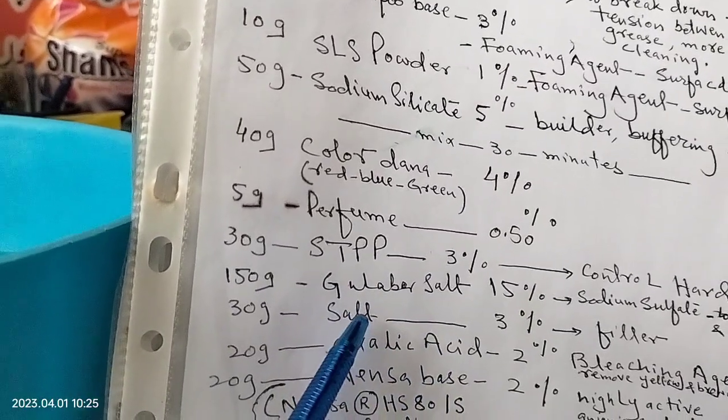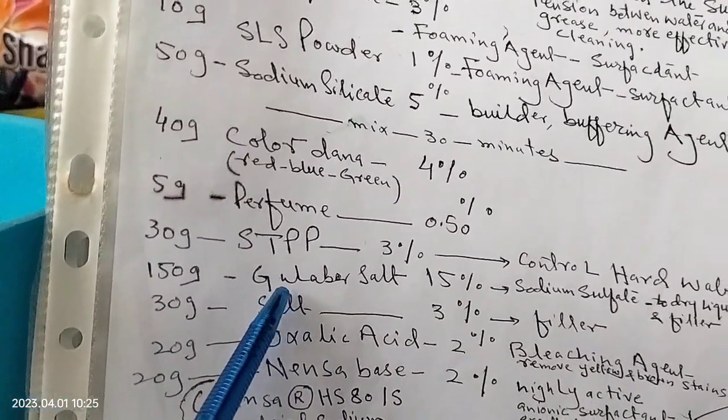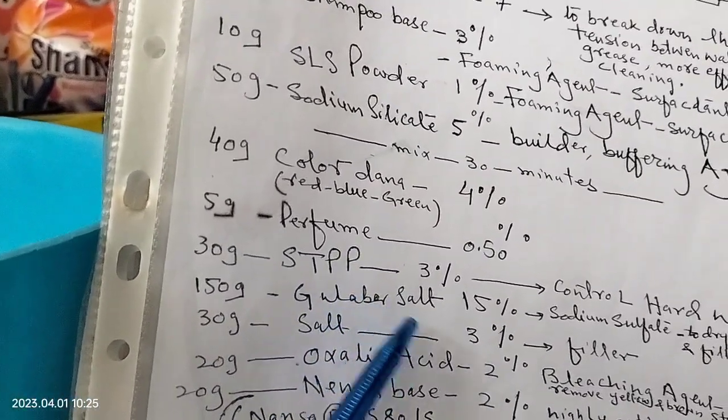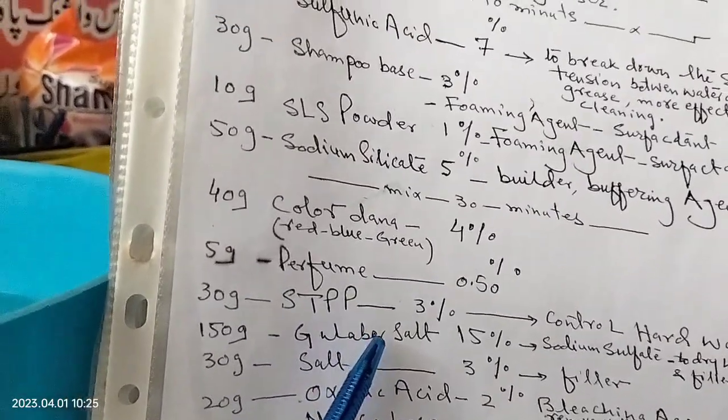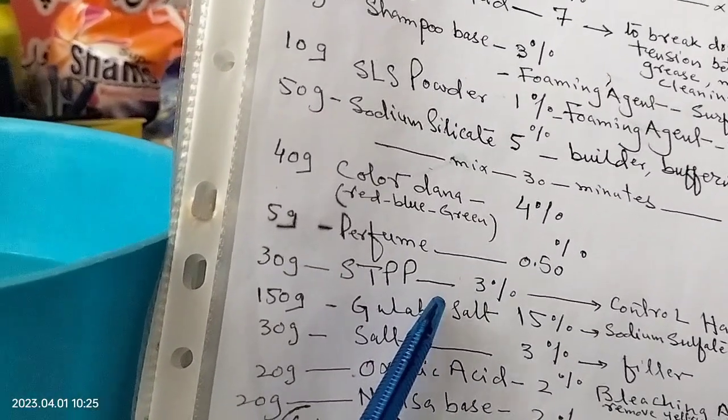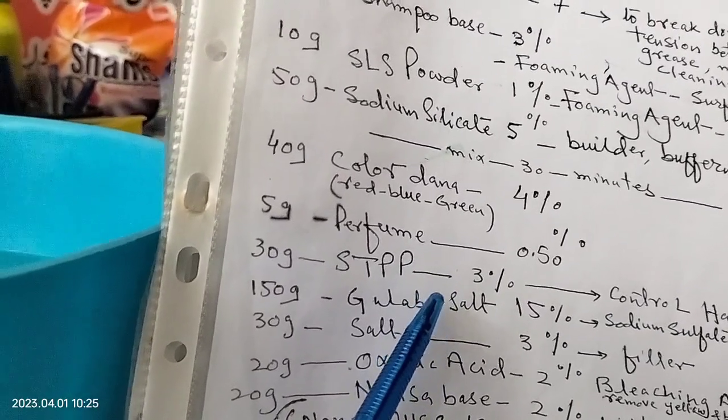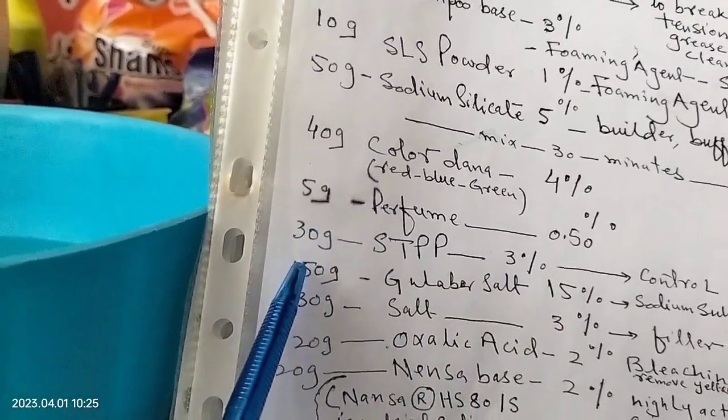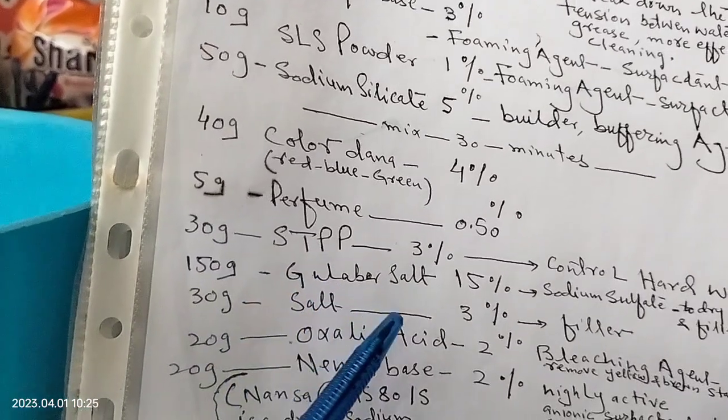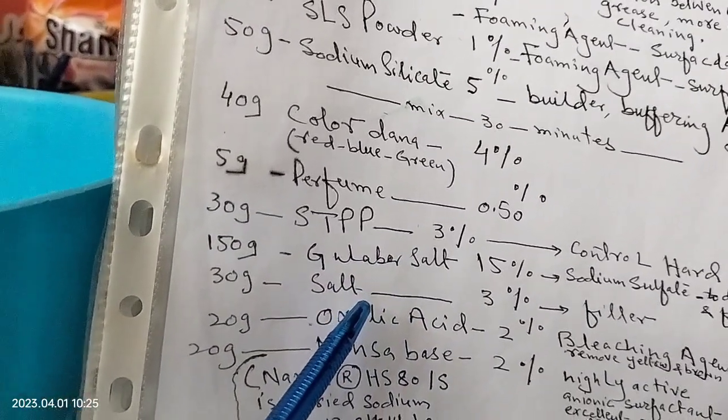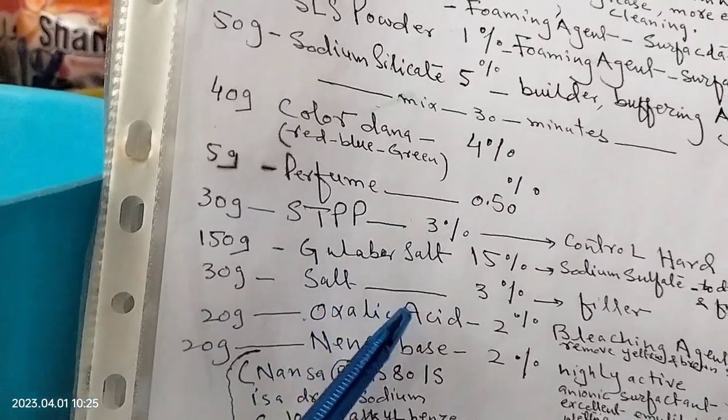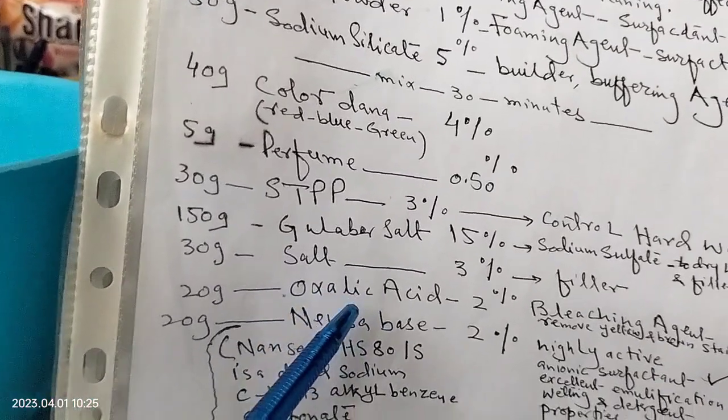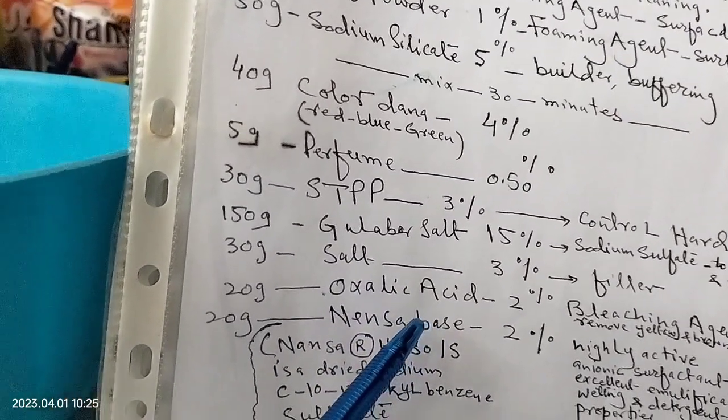Gulabar salt 15%, means sodium sulfate. Sodium sulfate controls dryness and is a cleaning agent, and it is also filler. Clean the blood, 3%, 30 grams. Oxalic acid, bleaching agent, 2%, 20 grams.